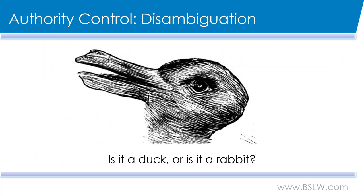So how do we go about achieving the previous goals through authority control? First, we begin with disambiguation. Let's take a quick look at this picture. This is an ambiguous picture in the sense that we're not really sure if it's supposed to be a duck or a rabbit. There is not one single thing that denotes it as one over the other. The same thing happens with headings that appear in a bibliographic record. There may be more than one author by the same name, so unless we find a way to make them unique or disambiguate them, our searching capabilities will not be as fine-tuned as we would like.